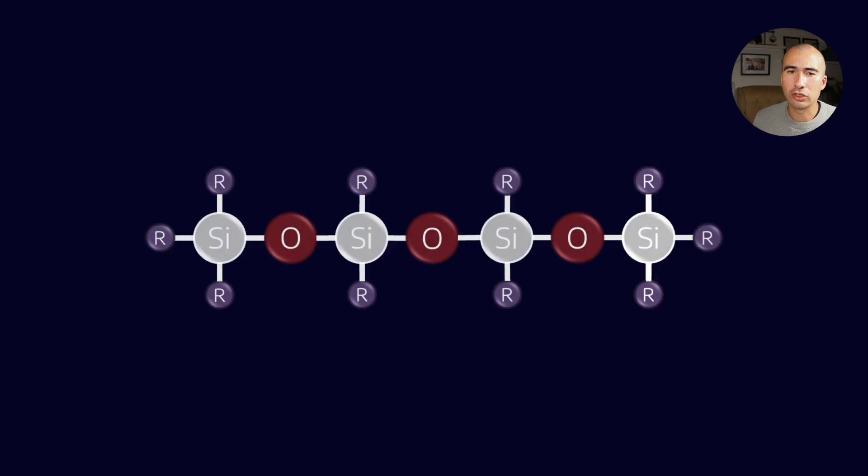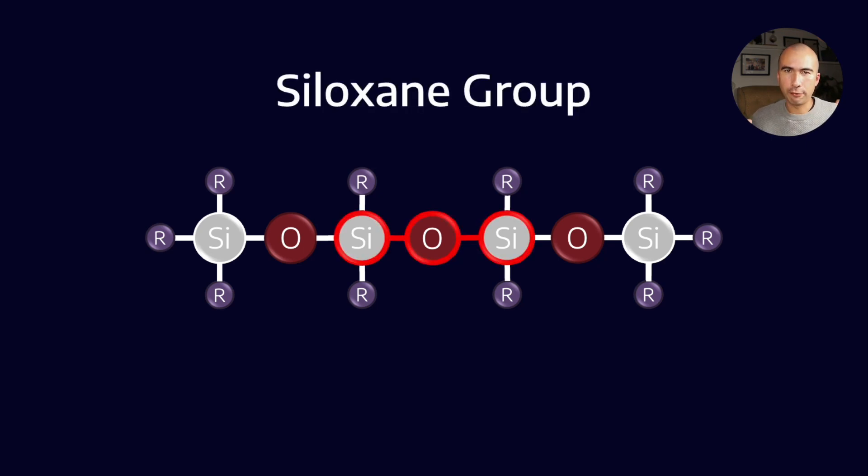The other big concern that we have in these contaminated gases is what's called siloxanes. So siloxanes are actually a family of different molecules that have this siloxane group, which is the silicon bonded with oxygen bonded with silicon. So that's the siloxane functional group.